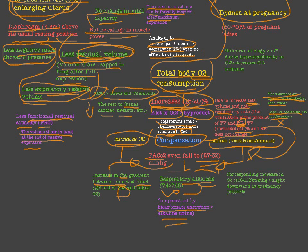The third effect of the decrease in CO2 is a corresponding increase in O2 concentration, which rises to about 106 to 108 mmHg. However, a slight downward shift in O2 occurs as pregnancy proceeds, so the increase in O2 is mainly seen in early pregnancy and then gradually decreases as pregnancy advances.